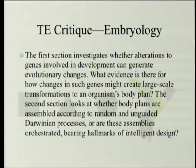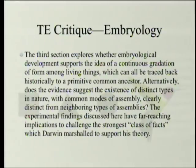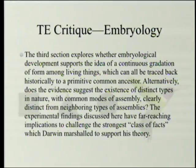The first section investigates whether alterations in genes involved in development can generate evolutionary changes. The second section looks at whether body plans are assembled according to random and unguided Darwinian processes, or whether these assemblies bear hallmarks of intelligent design. The third section explores whether embryological development supports a continuous gradation of forms tracing back to a primitive common ancestor, or whether evidence suggests distinct types with common modes of assembly. She's going against the heart of what Darwin considered evidence for evolution.